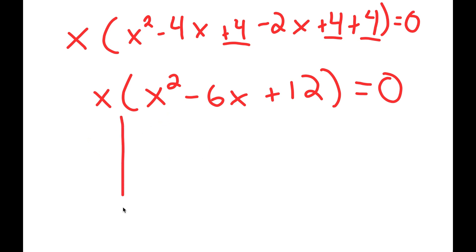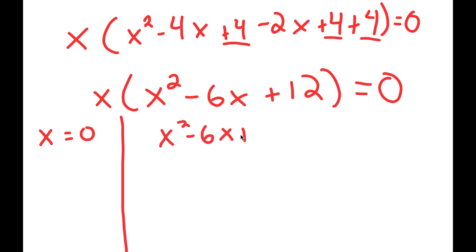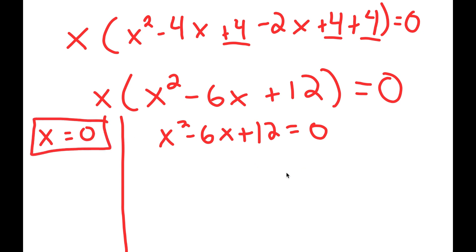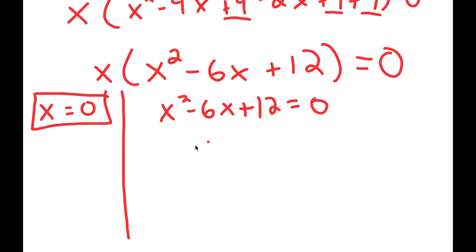This gives me two equations: x is equal to 0, and x squared minus 6x plus 12 is equal to 0. So x equals 0 is already a solution. And for x squared minus 6x plus 12 equals 0, we're going to have to use the quadratic formula.